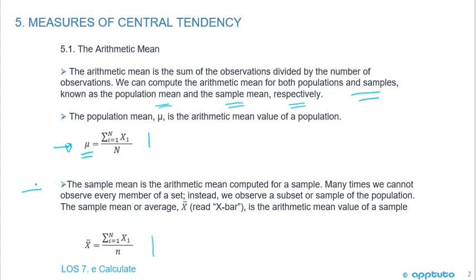The sample mean is the arithmetic mean computed for a sample. Many times we cannot observe every member of a set, so we observe a subset or a sample of the population. We use mu for the population mean, and x-bar is for the sample mean. X-bar is the arithmetic mean value of a sample.